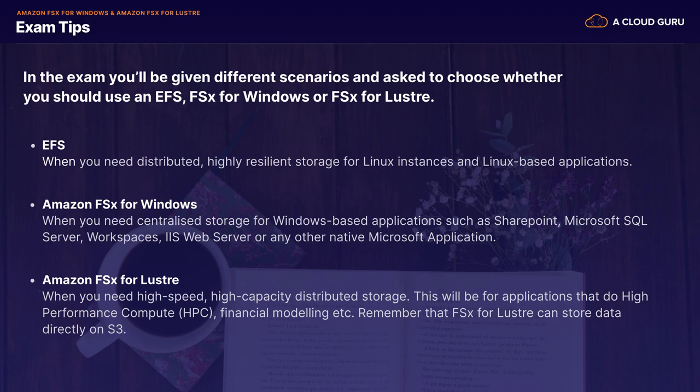And finally, if you're doing big data, you want to look at Amazon FSx for Lustre. This is when you need high-speed, high-capacity distributed storage — for applications that do high-performance compute, financial modeling, etc. Remember that FSx for Lustre can store data directly on S3 as well.